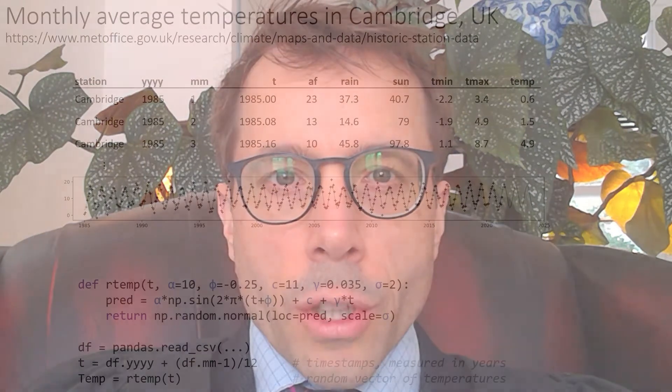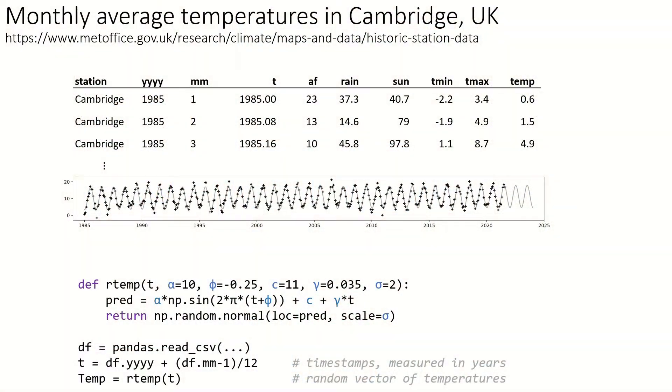The goal of this video will be to get used to how we specify probability models. Let's start with an example. Here's a climate model of Cambridge for the dataset we looked at in the last video. Have a quick read of the code.